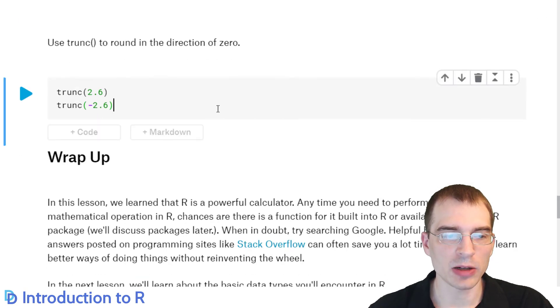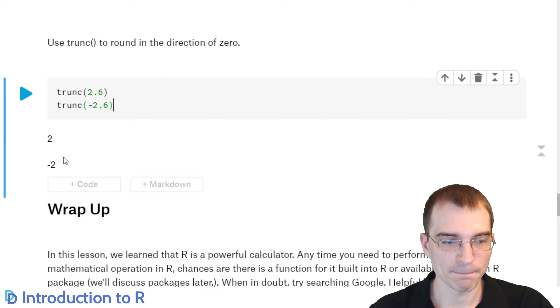And there's one final rounding function here called truncate or trunc. And what that does is it rounds in the direction of 0. So if you have a positive number like 2.6, it's going to round towards 0. So it's going to round down to 2. But if you have a negative number like negative 2.6, it's actually going to round up towards 0 to negative 2. So let's run that. There we go.